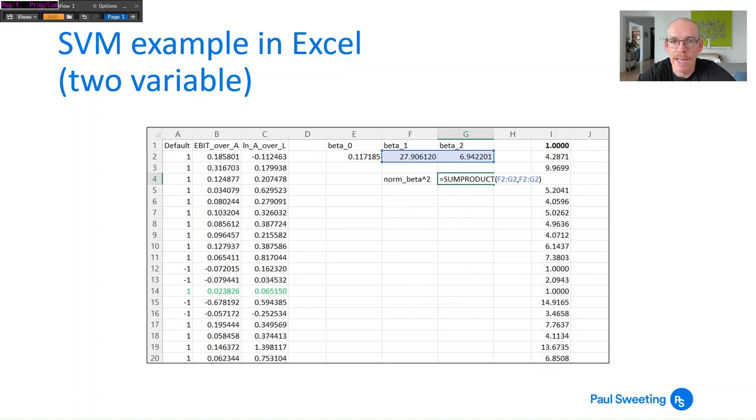So you want to find the smallest number of that set because that is going to be your constraint. You then look at what the norm squared of β₁ and β₂ is, which is essentially we calculate it as f2 g2 times f2 g2 the sum product of those which is essentially β₁² plus β₂². So that is what you are going to be trying to adjust to try to make sure the margin is as big as possible. So you're going to try and make that as small as possible.